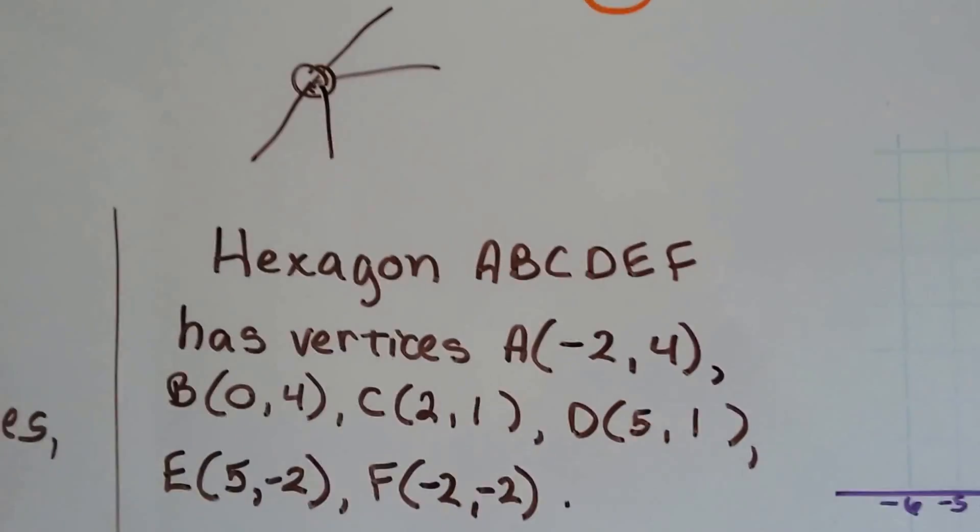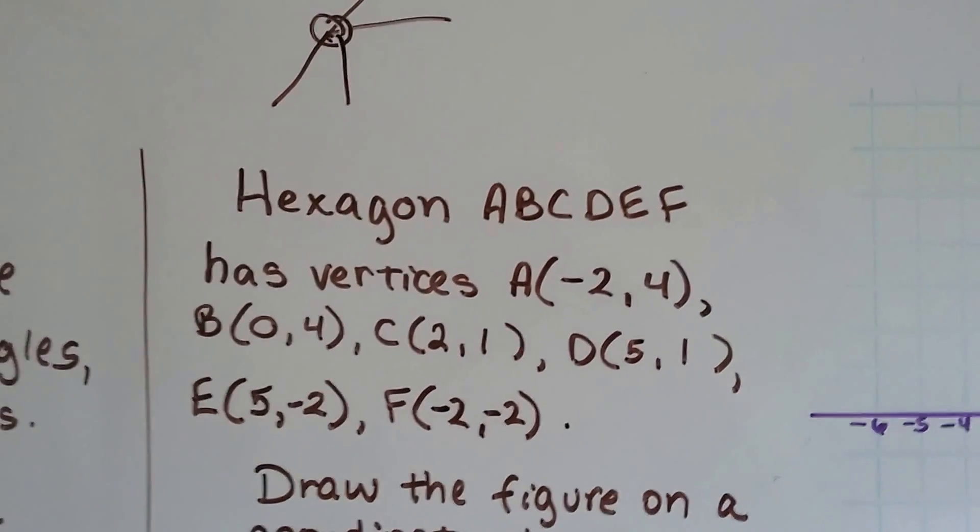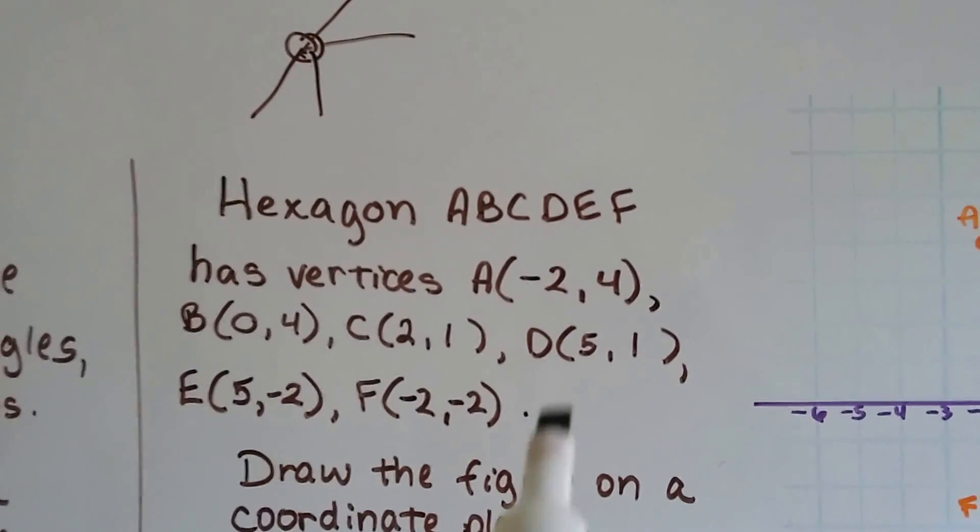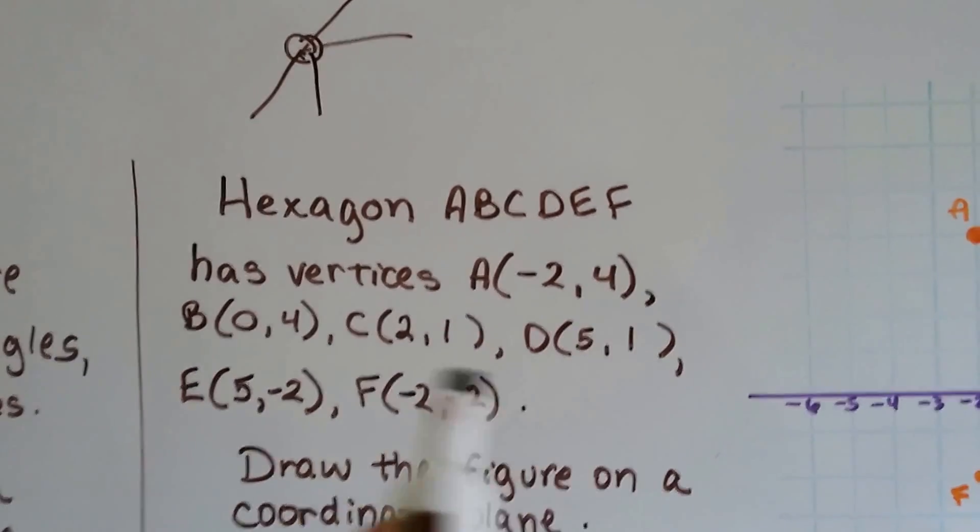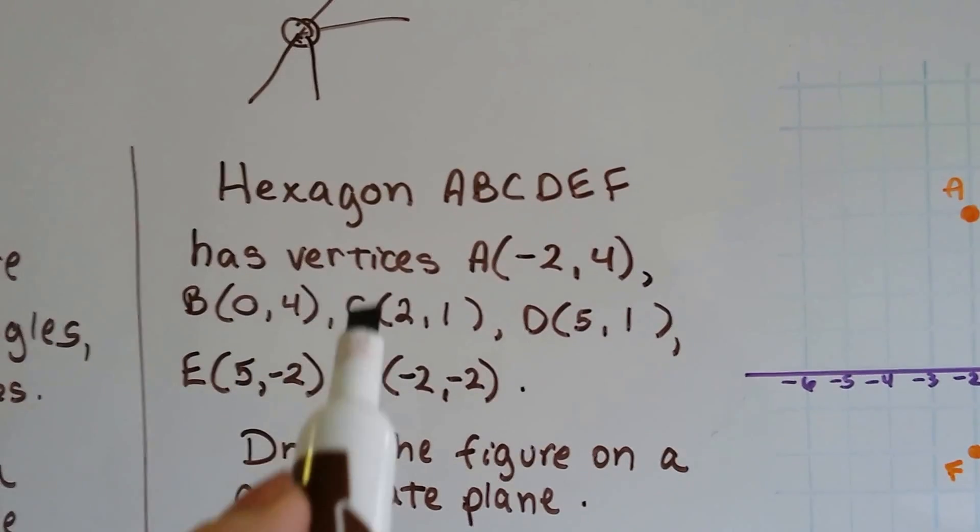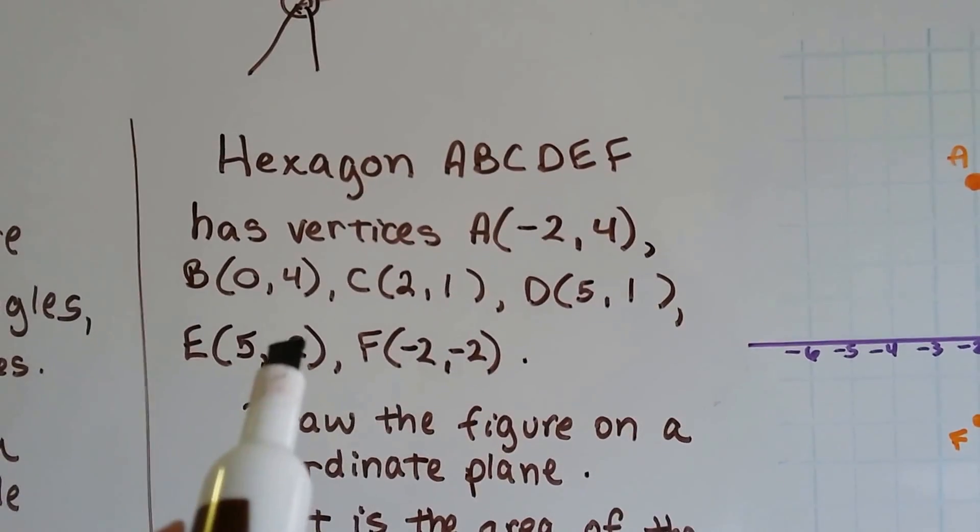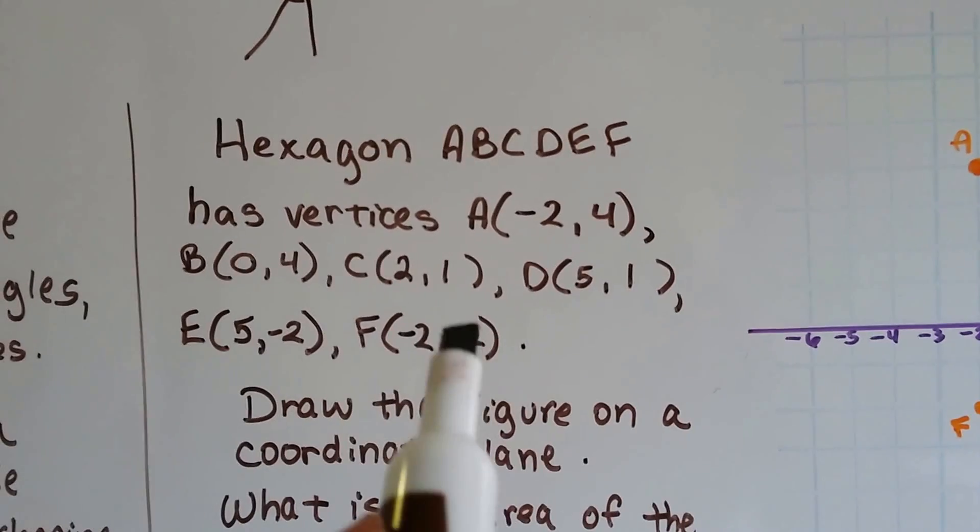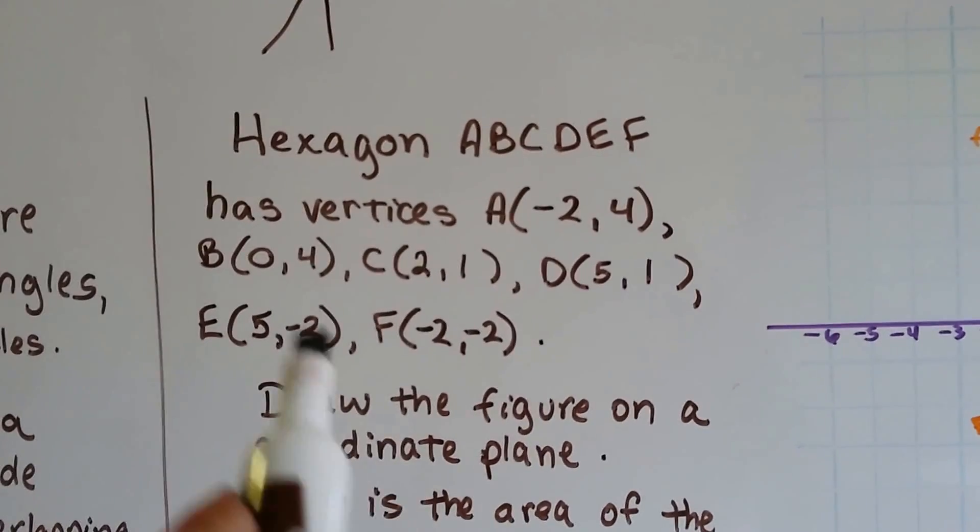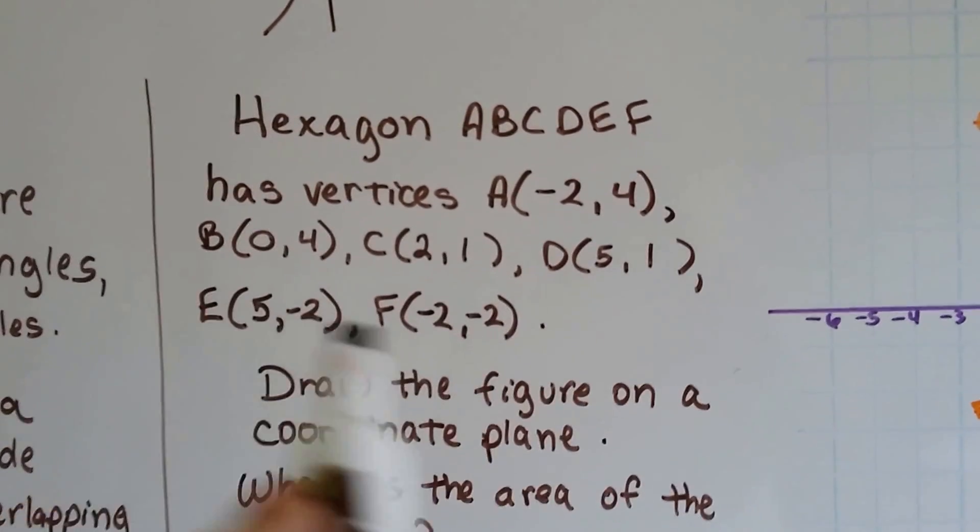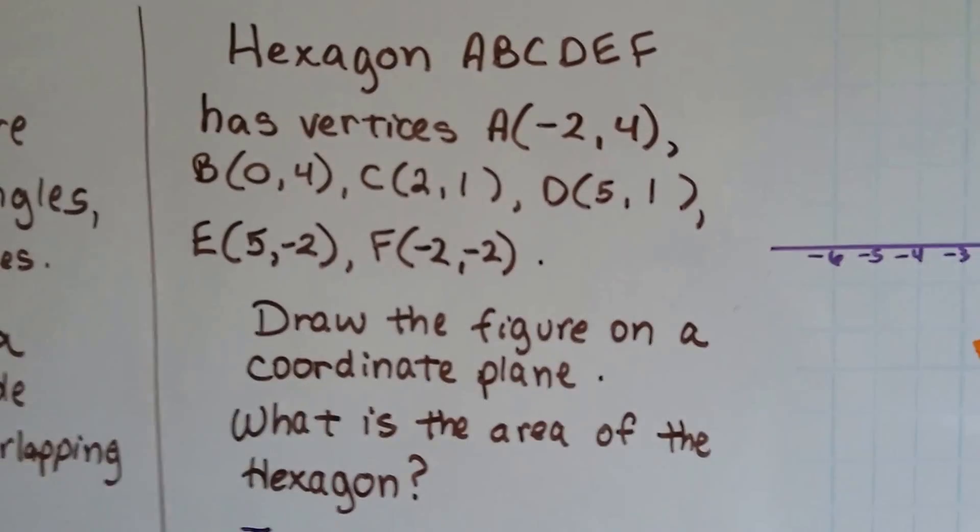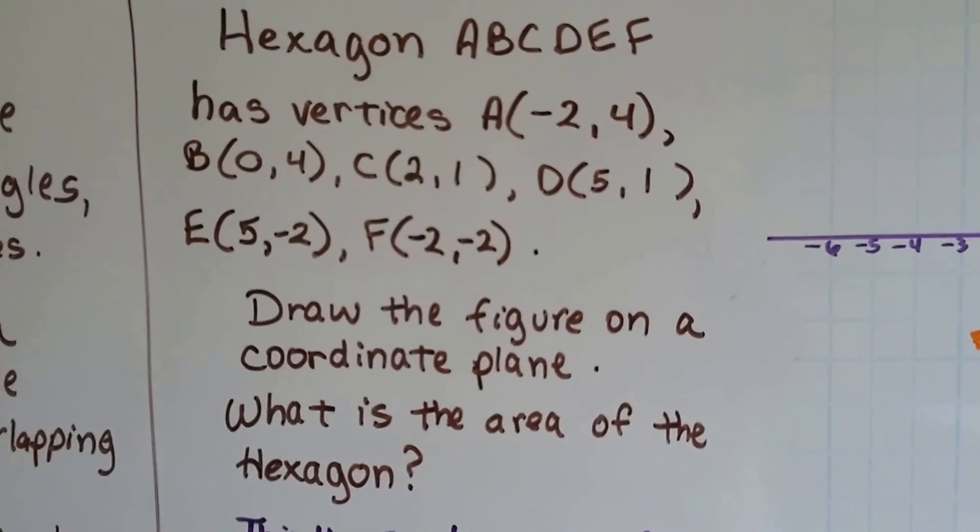So, hexagon ABCDEF has vertices A at (-2, 4), B at (0, 4), C at (2, 1), D at (5, 1), E at (5, -2), and F at (-2, -2). Those are the points on the plane. Draw the figure on a coordinate plane. What is the area of the hexagon?